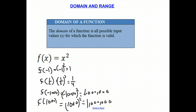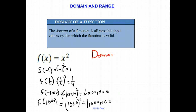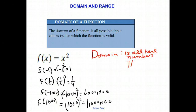As you can see, there is no value that we can't put for x. Any real number could be put in for x and we would get a valid output. So the domain of this function is all real numbers. Another way of writing that means the domain is all real numbers.